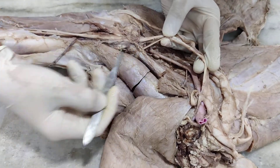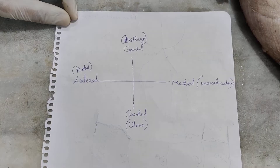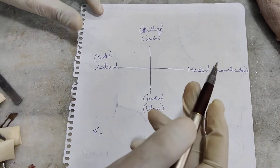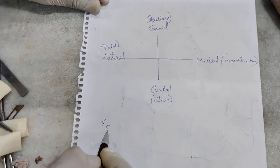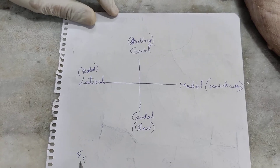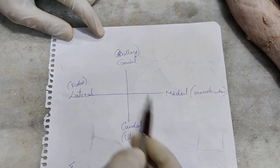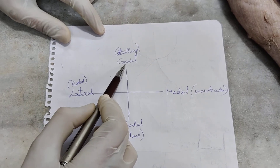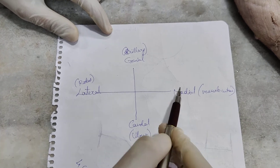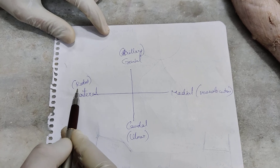The musculocutaneous nerve will continue on the medial side as the medial cutaneous antebrachial nerve. There are four cutaneous antebrachial nerves arising from different nerves of the brachial plexus: the cranial cutaneous antebrachial is from the axillary nerve; the caudal cutaneous antebrachial is from the ulnar nerve; the medial cutaneous antebrachial nerve is from the musculocutaneous nerve; and the lateral cutaneous antebrachial nerve is from the radial nerve.